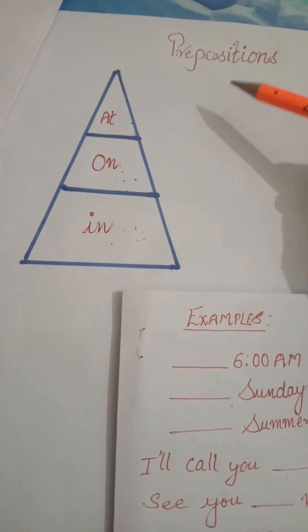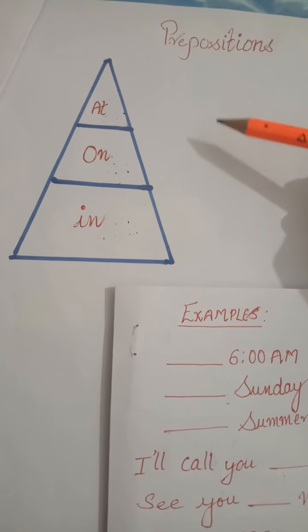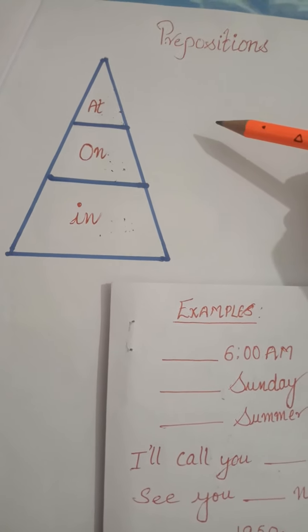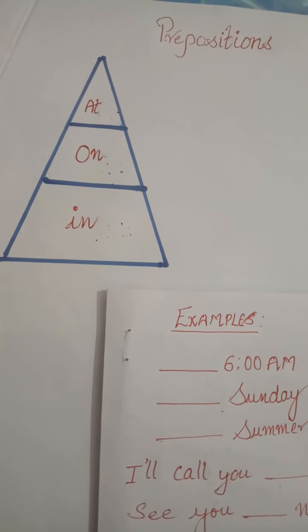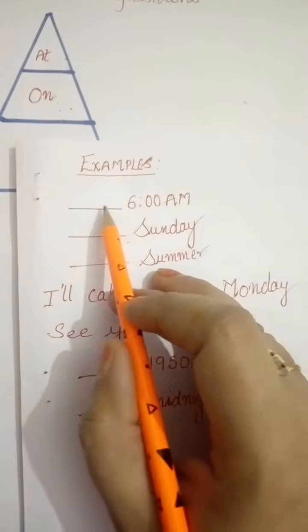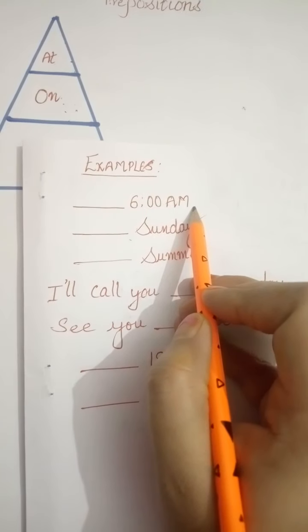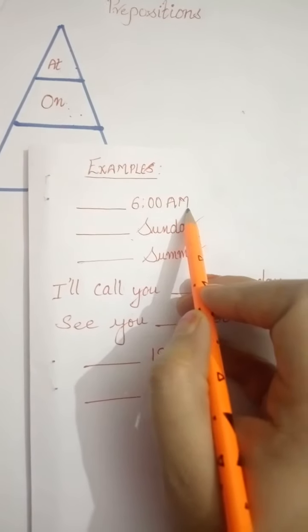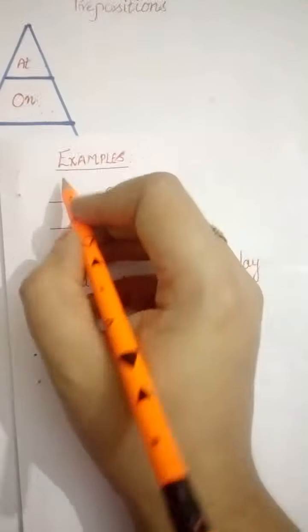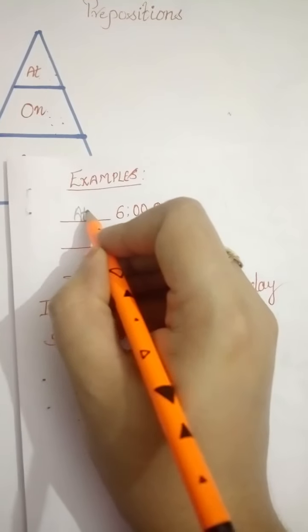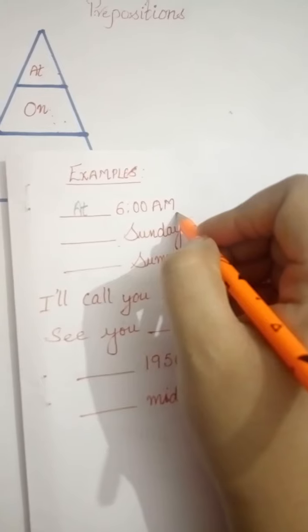Now, let's do the practice to see how well we have understood this. Now, the first fill up is dash 6am. So what do we say? At. At 6am.